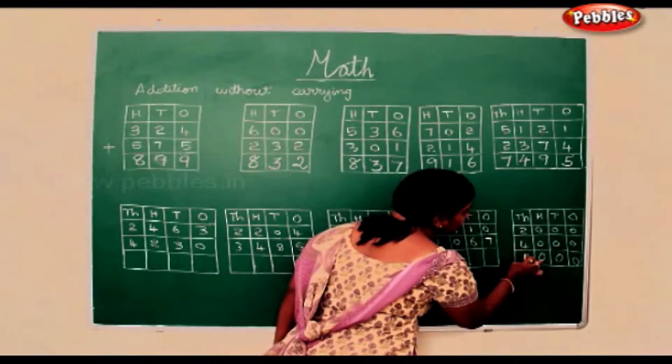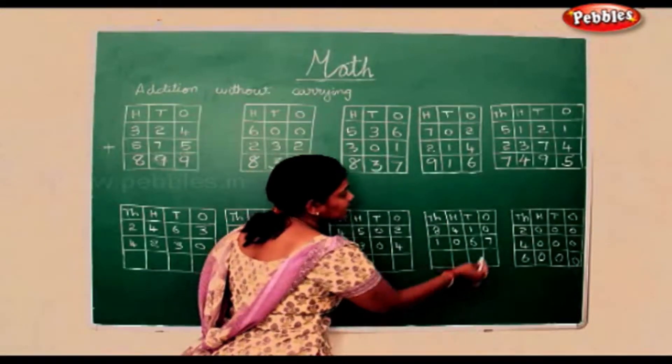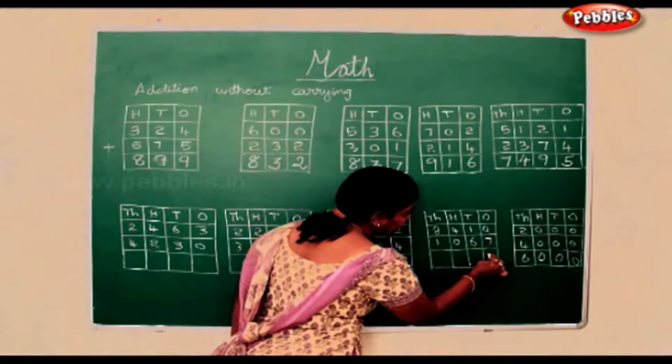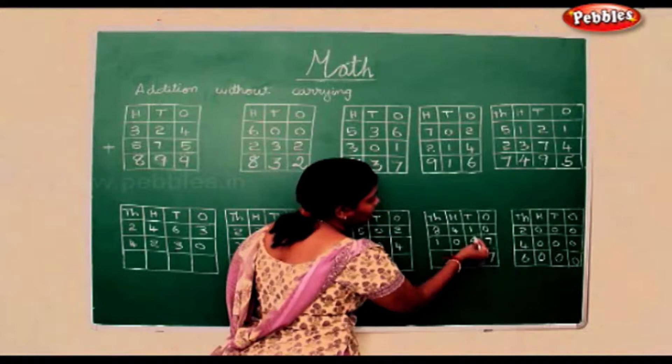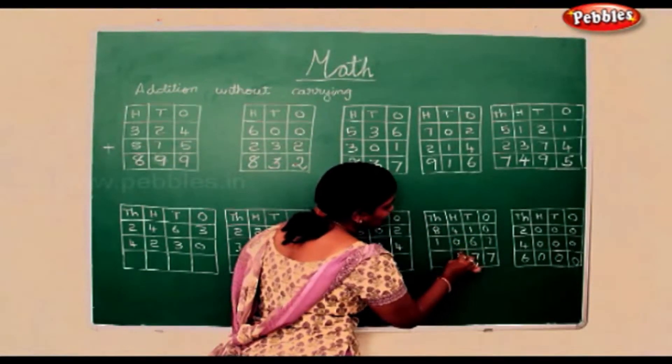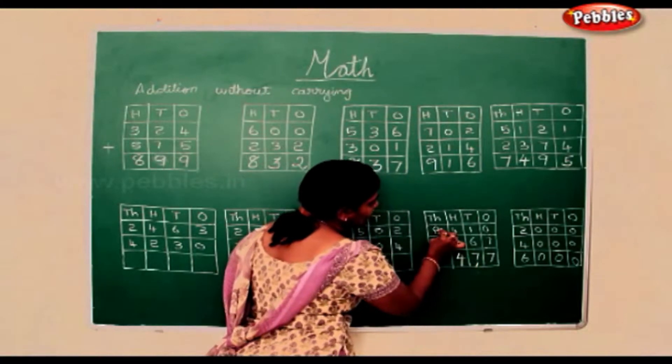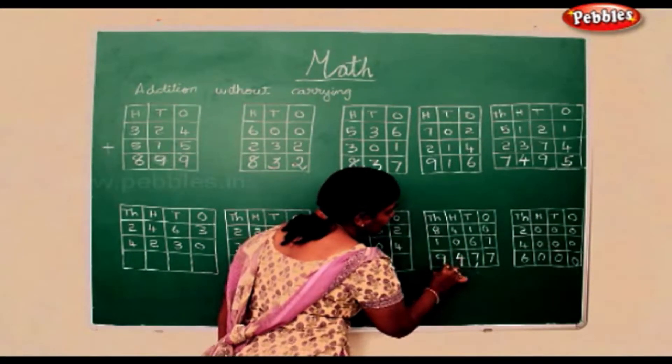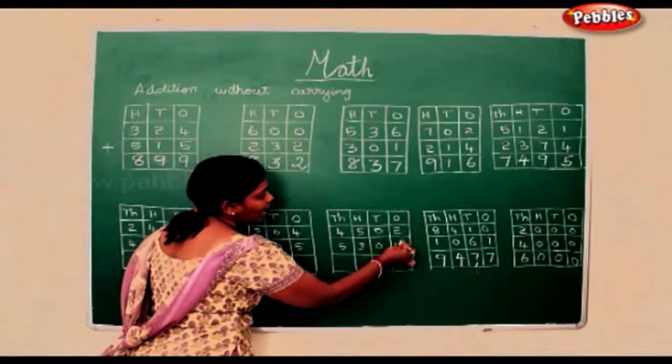2 plus 4 is 6. 0 add 7 is the number itself, again you write just the 7. 1 add 6 is 7, 4 add 0 is 4, 8 add 1 is 9, 2 add 4 is 6.